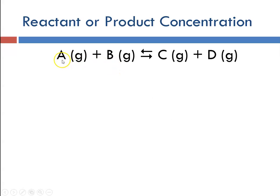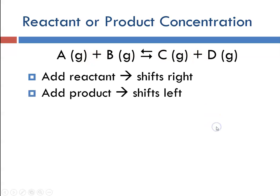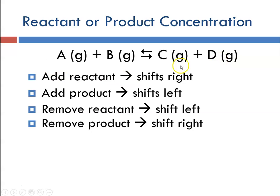So if we have the reaction A plus B yields C plus D, all in the gas phase: adding reactant will shift things to the right to form products. Adding product would shift it back to the left to produce more reactants. Removing reactant will shift it to the left to form more reactant, and removing product would result in shifting toward the product direction.